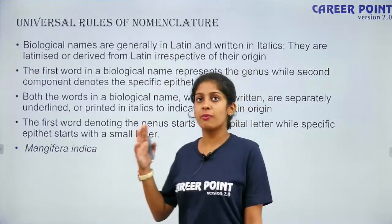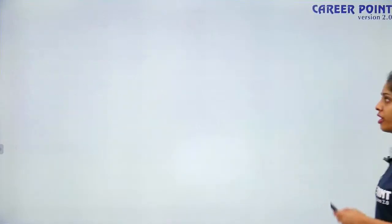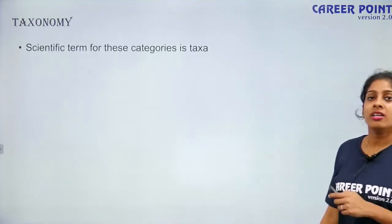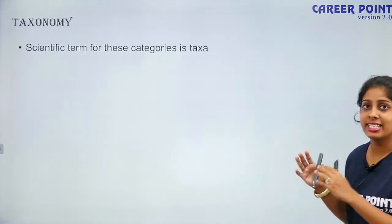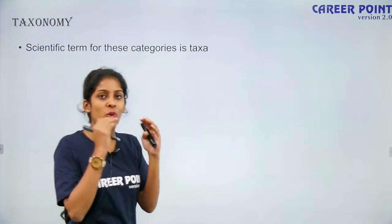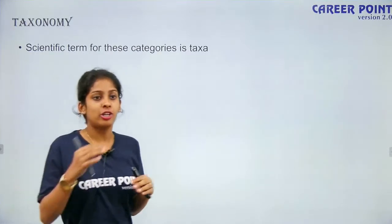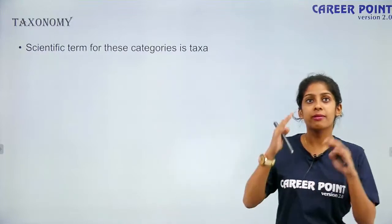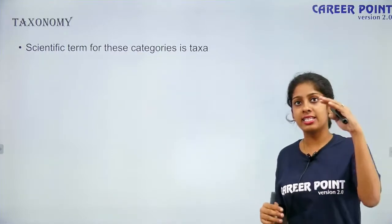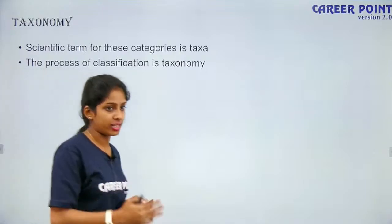Scientific names are present for animals and microorganisms too. We human beings fall under Homo sapiens — that is also binomial nomenclature. Going forward, another term is taxonomy. The scientific term for categories is called taxa. Once you have characterized, identified, and named an organism through nomenclature, you need to classify them. That classification process is called taxonomy — classifying as plant kingdom, animal kingdom, prokaryotes, eukaryotes, etc. Each level in classification is called a taxa.